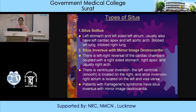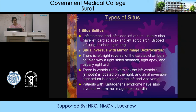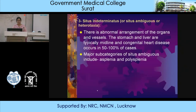In situs solitus: left stomach and left-sided left atrium, usually also with left cardiac apex, left aortic arch, bilobed left lung, and trilobed right lung. In situs inversus with mirror image dextrocardia: there is left-to-right reversal of cardiac chambers with right-sided stomach, right apex, and right arch; ventricular inversion with the left ventricle (the smooth one) on the right side; and atrial inversion. In situs indeterminatus or situs ambiguus (heterotaxia), the stomach and liver are typically midline, and congenital heart disease occurs in 50–100% of such cases. Major subcategories include asplenia and polysplenia.